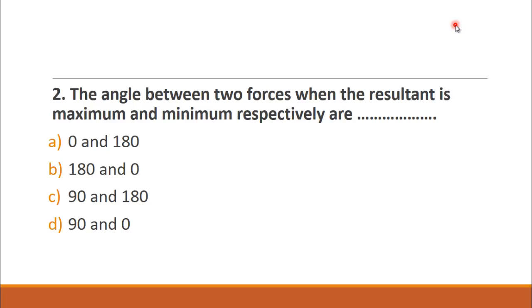MCQ number two is: The angle between two forces when the resultant is maximum and minimum respectively are? The choices are A. 0 and 180 degree, B. 180 and 0 degree, C. 90 and 180 degree and D. 90 and 0 degree. It is clear that the resultant of the two forces will be maximum when it lies in the same direction, meaning the angle must be 0 degree, and minimum when the forces lie in opposite direction. So choice A is the correct choice, that is 0 degree and 180 degree.